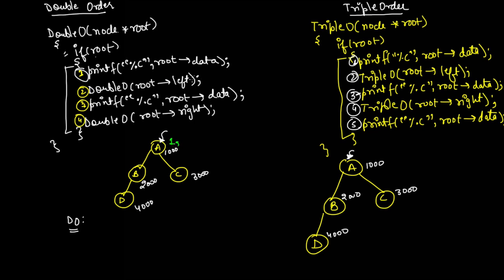When we execute line 1 for node A it prints A, then we execute line 2 which calls double order on the left subtree. For node B, line 1 prints B, then line 2 visits B's left subtree. For node D, we execute line 1 which prints D.